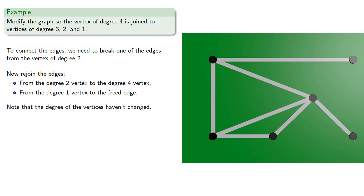Note that the degrees of the vertices haven't changed, but now the vertex of degree 4 is connected to vertices of degree 3, 3, 2, and 1.